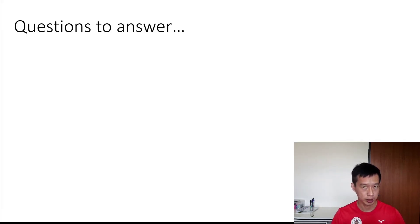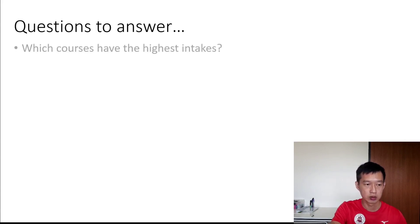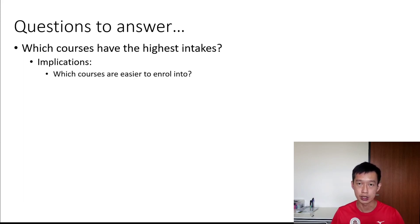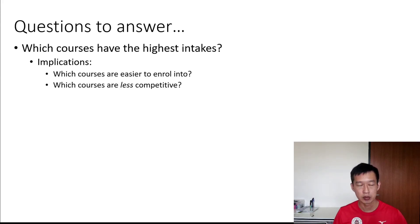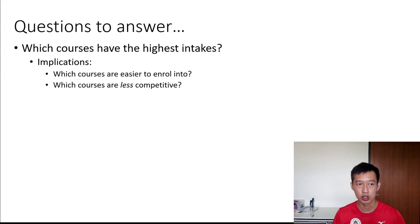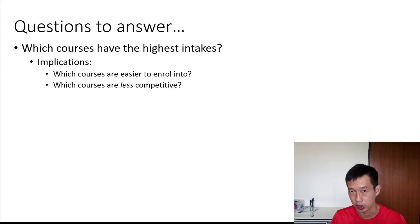After looking at the data, I've decided to ask myself some questions. The first is: which courses have the highest intakes? The implication is that courses with the highest intakes are easier to enroll in. If you're aiming for a course with an extremely small intake, it's going to be very hard to get in. Courses with the highest intake numbers are also typically less competitive, and universities want to hit a certain graduation percentage — so if a course is made unnecessarily difficult, students may struggle to graduate.